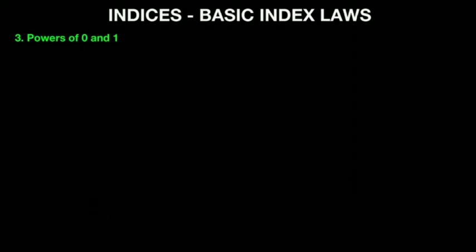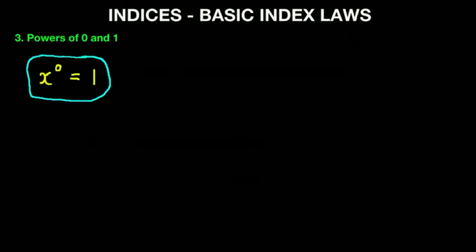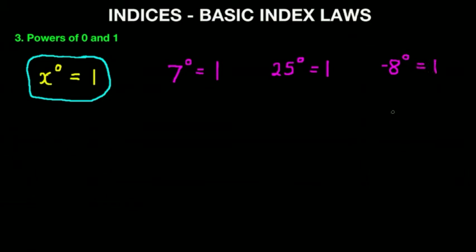Let's move on to our next topic: powers of zero and one. The rule here is: if we have x to the power of zero, the answer is one — anything to the power of zero is one. For example: 7 to the power of zero is one, 25 to the power of zero is one, and even minus 8 to the power of zero is one.